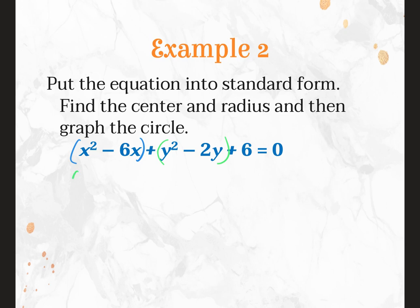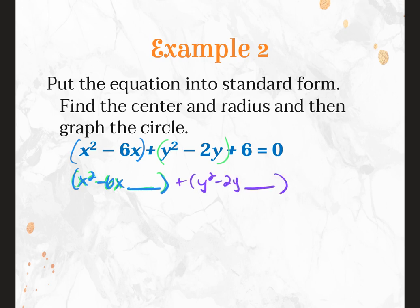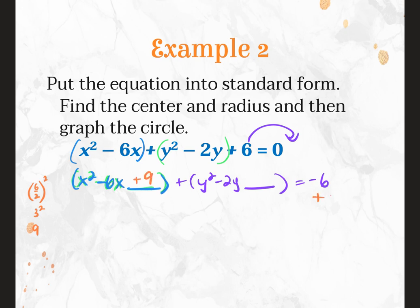We have to complete the square for any variable that has both a squared term and a first-power term — which means we'll do it twice: once for X and once for Y. Group them together: X squared minus 6X, leave a space, plus Y squared minus 2Y, leave a space, and bump the constant to the other side so it equals negative 6. Complete the square: 6 divided by 2 is 3, and 3 squared is 9. Add 9 here and to the other side. For Y: 2 divided by 2 is 1, squared is 1 — add 1 here and to the other side.